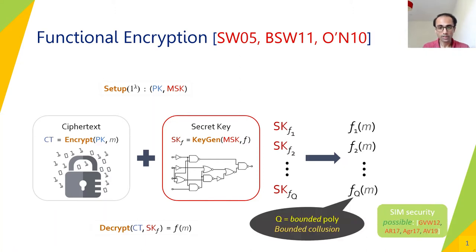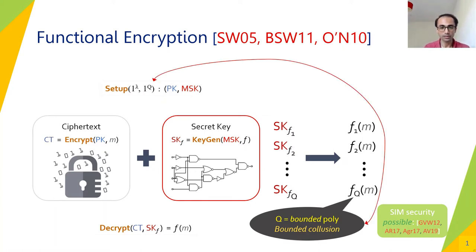Talking about a weaker security setting, we can think about bounding Q to be a bounded polynomial. We call this setting bounded collusion, where Q is fixed during setup. In such a setting, we can still argue simulation security. This is where our work begins and we try to address some limitations and overcome them.